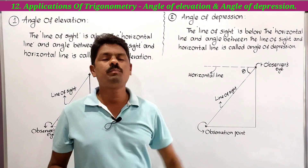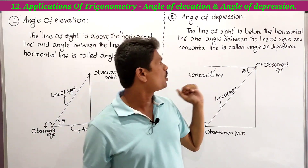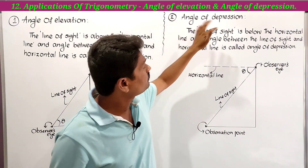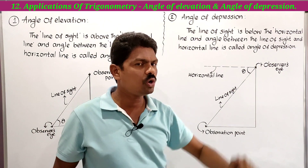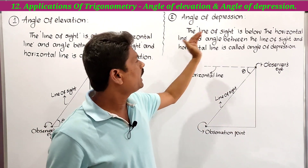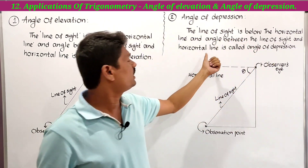Next is the angle of depression. The line of sight is below the horizontal line, and the angle between the line of sight and the horizontal line is called the angle of depression.